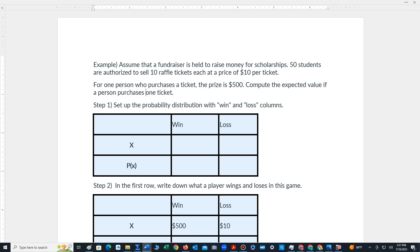Let's clarify that. So the first step is we draw the probability distribution. The X represents the outcomes, P of X the probabilities, and we divide it into win or loss columns.